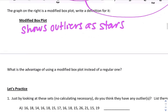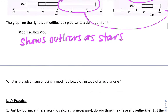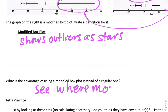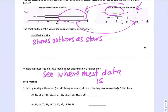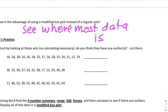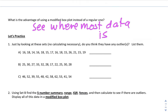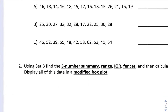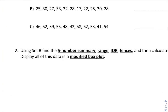The advantage of using a modified box plot instead of a regular one: you can see where most of the data is. Let's practice just by looking at these sets — no calculating necessary. Do you think they have outliers? We'll look at whether the numbers are pretty similar or if some stand out. We'll do that in class.